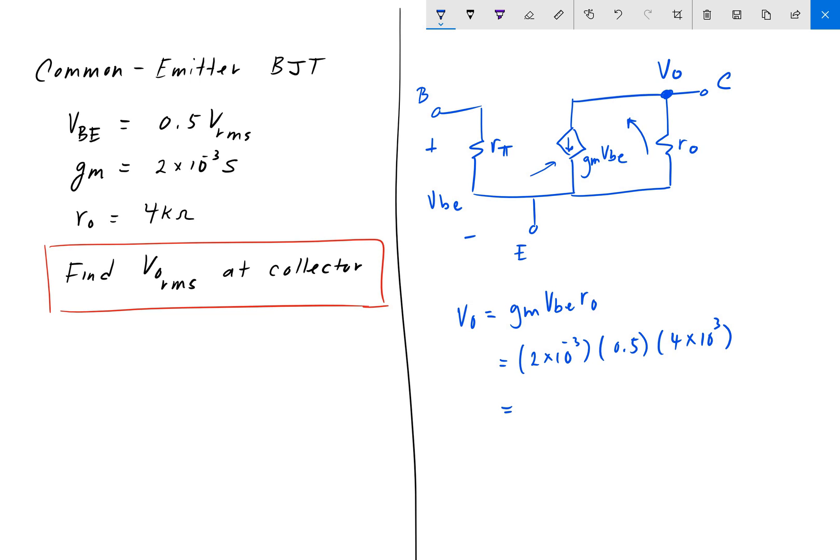Okay, the 10 to the 3s cancel here, and then you just get 2 times 0.5 times 4, and that is 4. So Vout is 4 volts.